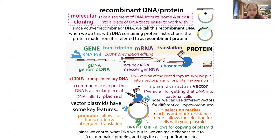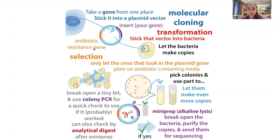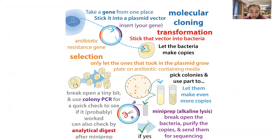The selection marker doesn't tell you if the sequence is right. How the selection marker works is that when we stick this into cells in a process called transformation, only the cells that have the plasmid are going to be able to grow and replicate because they have the antibiotic selection gene. But that doesn't tell you that the sequence is right. We have different techniques we can use, like colony PCR and analytical digest, to get an idea if it's okay, then we can send it for sequencing to make sure the sequence is correct.